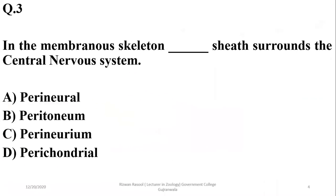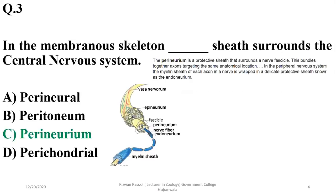Question 3: In the membranous skeleton, it surrounds the central nervous system. It is perineurium, which is the membranous covering of different neurons, whether they are present in the CNS or PNS. So C is the best option according to me.